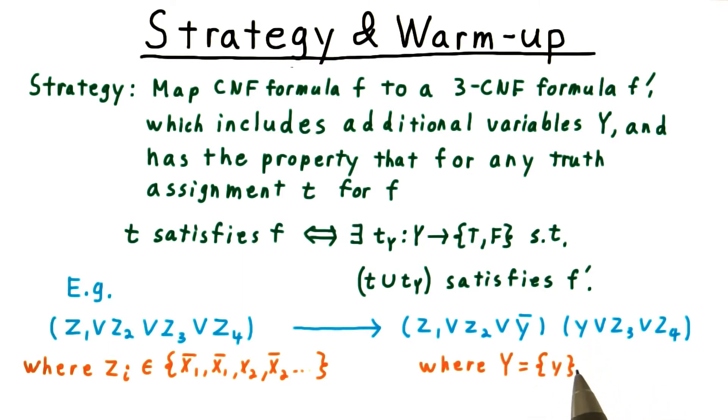Going the other direction, suppose that we have a truth assignment that satisfies both of these clauses. On the one hand, y might be true. But that then implies that z1 or z2 is true, and so this clause must be true.